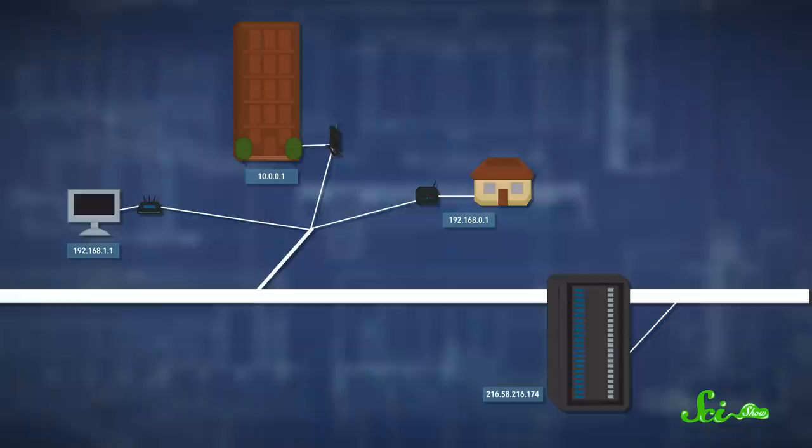Every device connected to the internet has an address, and when you use the internet, you need to send data back and forth between those addresses. But to get to its destination, that data needs to be bounced around to a few different places along the way, and to make sure it gets to the right place, it needs directions.